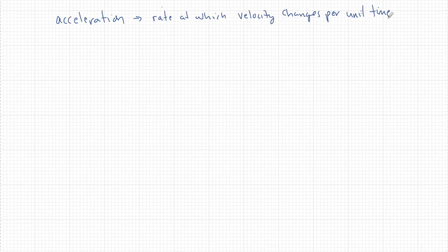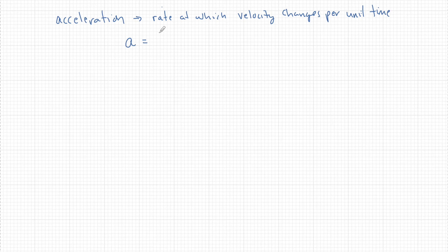We can write the definition of acceleration in words, but it's much easier in variables. In words, it's the rate at which velocity changes per unit time. The variable is just a lowercase a. So a is going to be equal to a change of velocity, delta V, per unit time. This is the definition in variable form for acceleration.